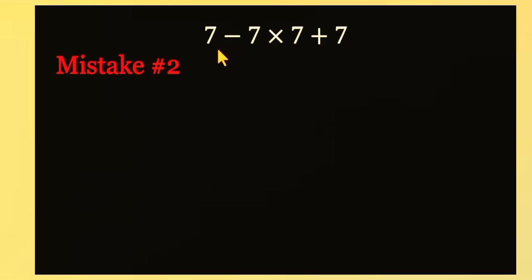Second mistake. Others go straight from left to right. They do 7 minus 7 equals 0. Then 0 times 7 equals 0. And finally 0 plus 7 equals 7. It looks logical, but math doesn't really work that way.